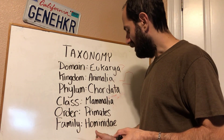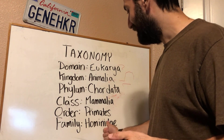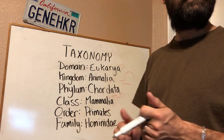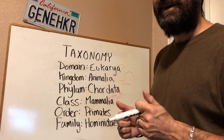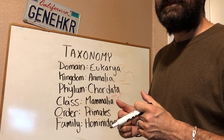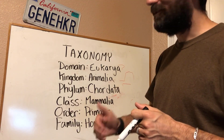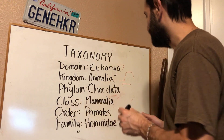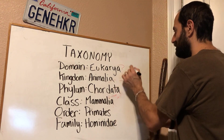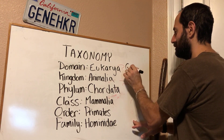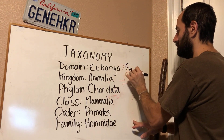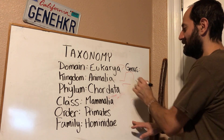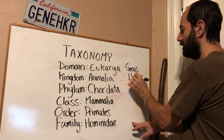Family — Hominidae. And then we've got more and more specific. Genus. Our genus is homo.